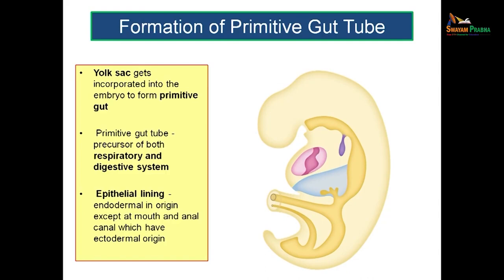The epithelial lining of the gut is actually endodermal in origin because the yolk sac has an endodermal lining. So the epithelial lining of the gut tube will also be endodermal in origin, except at the two ends — the future mouth and the future anal canal. At these regions you would not get an endodermal lining but an ectodermal lining, while throughout the rest of the gut tube you will get an endodermal lining.